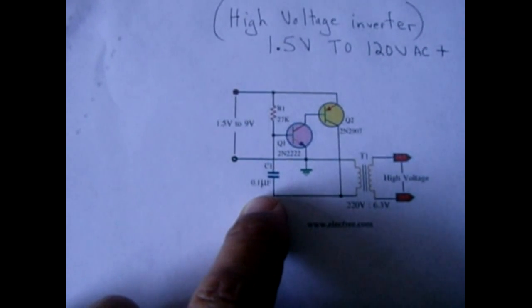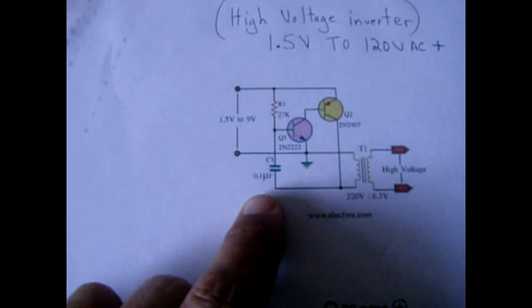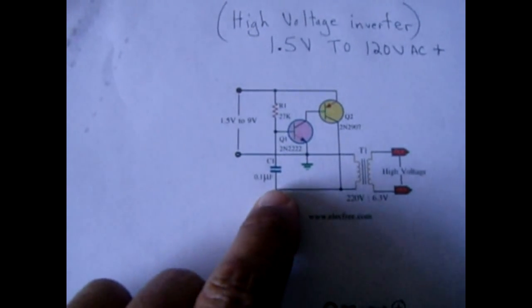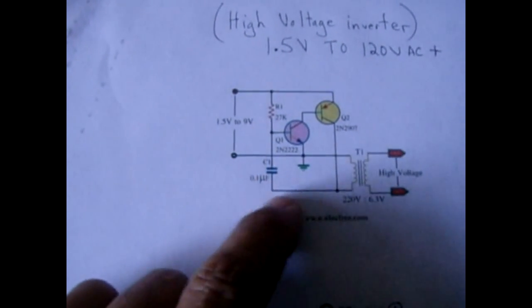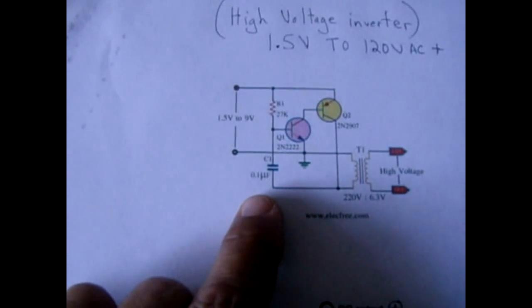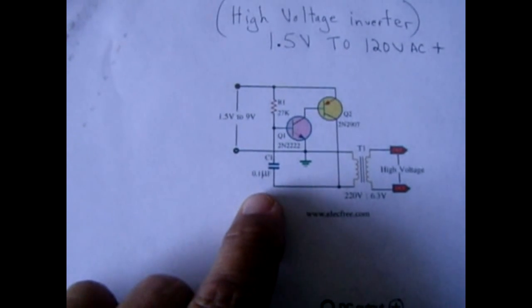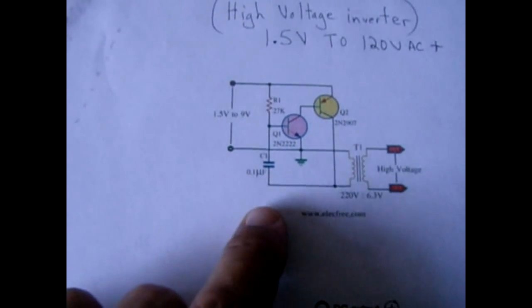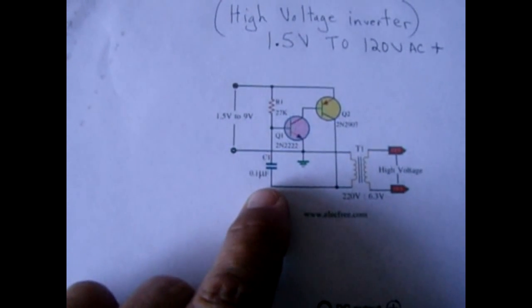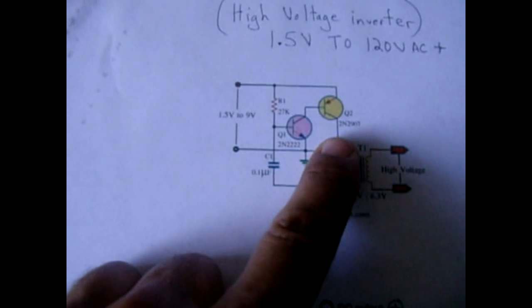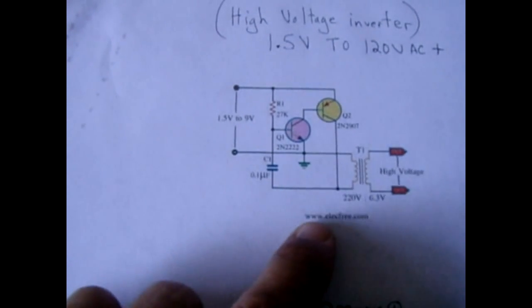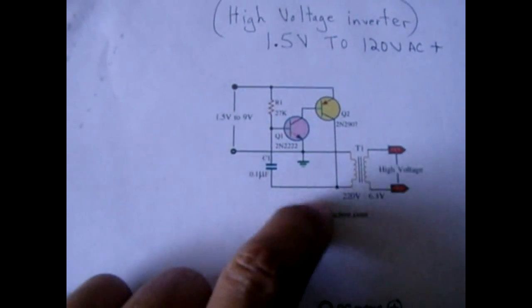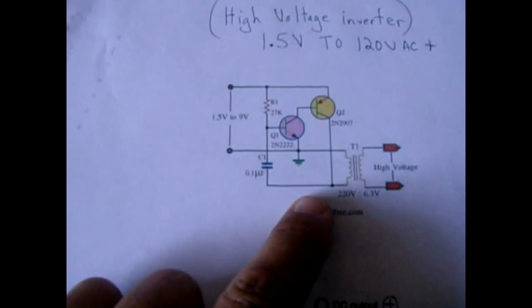By adjusting this capacitor value you can adjust the frequency of the circuit. Putting a lower value capacitor will cause the frequency to go higher, the switching will become much faster, and by putting a larger value causes the frequency to drop and the switching becomes slower.